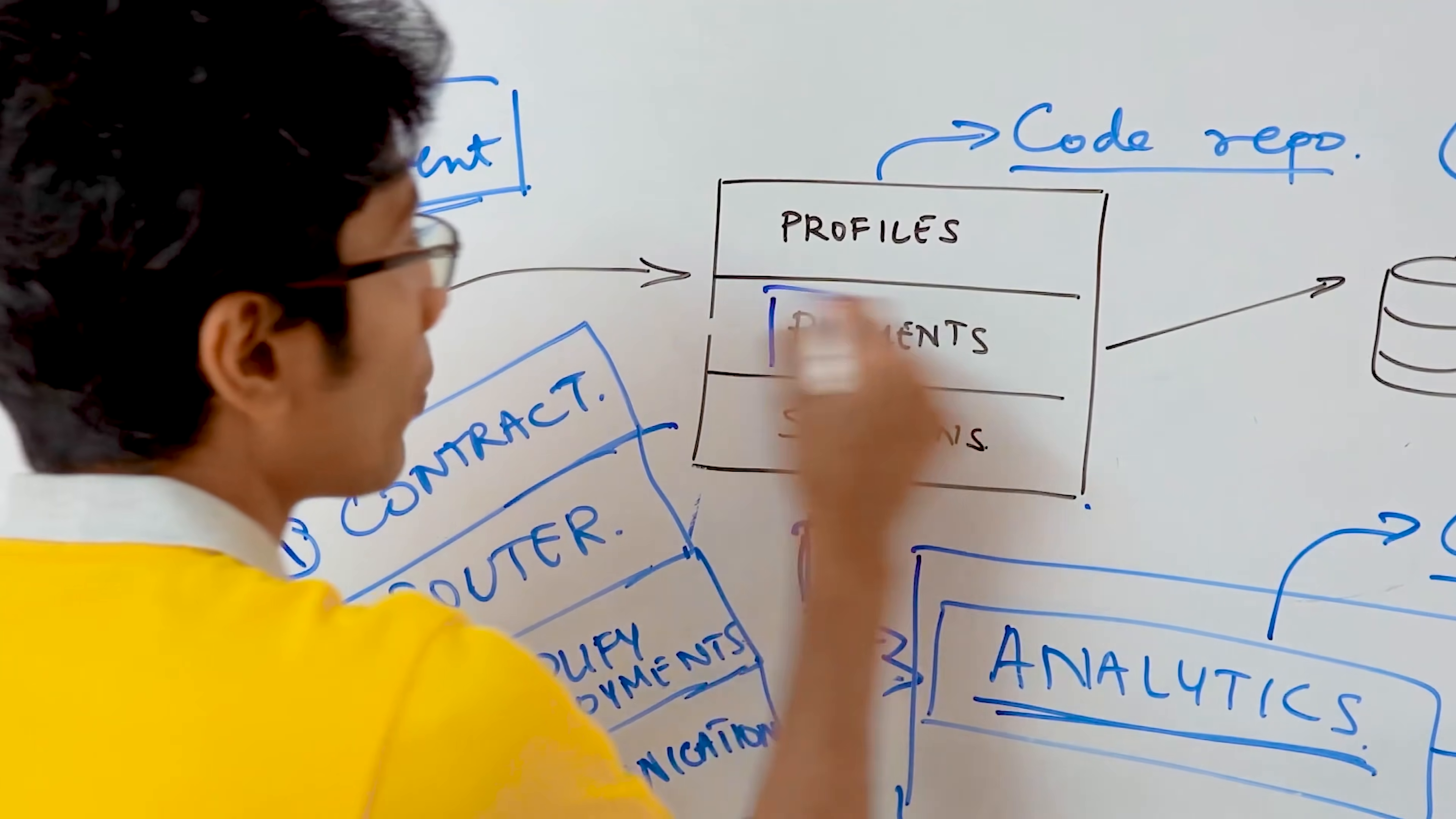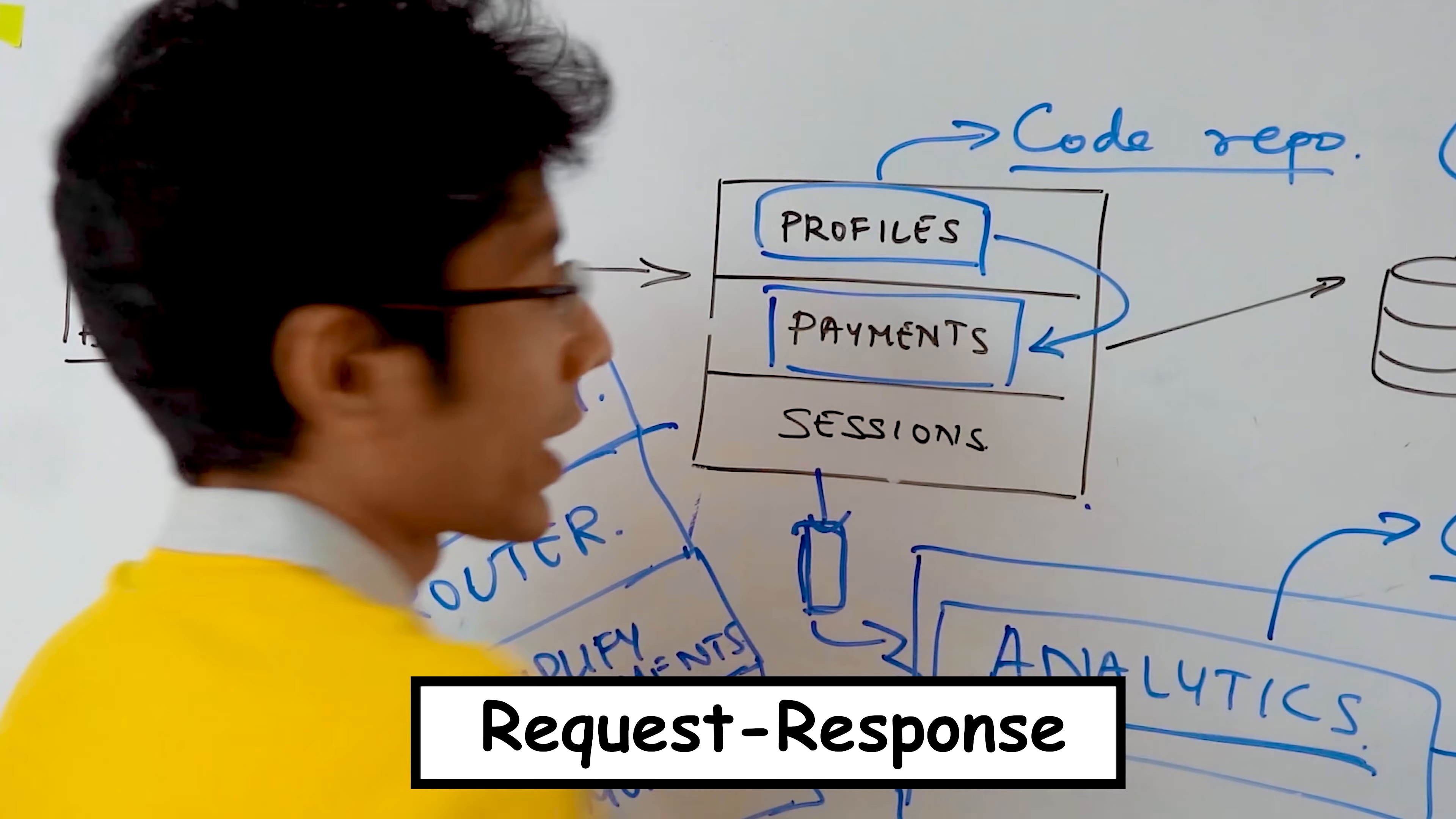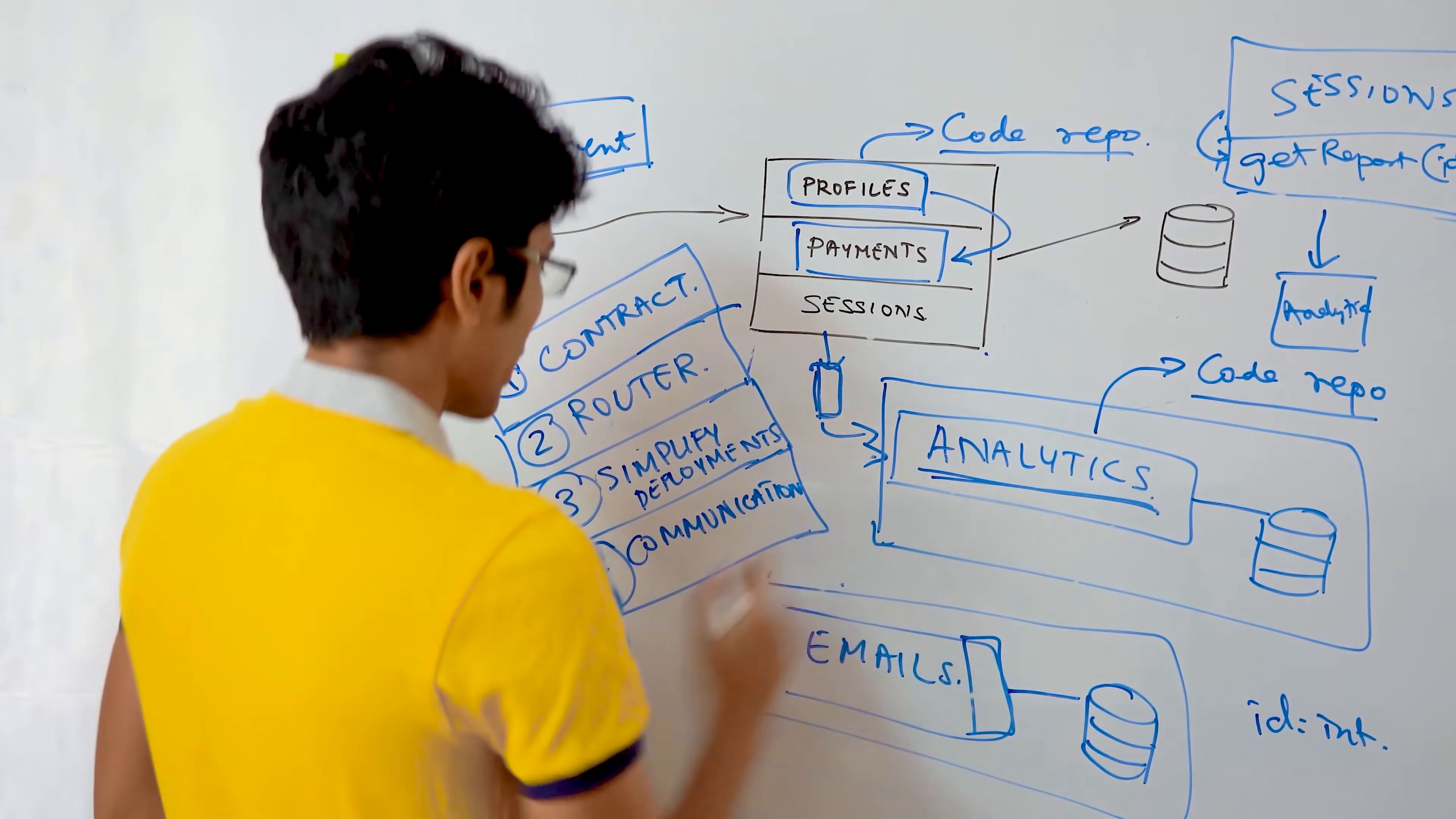While in payments, you might need a much more immediate response. So when the profile service is talking to the payment service, you might want a request response architecture so that you know exactly what happened immediately after a request has been sent to payments. So that's the communication bit.